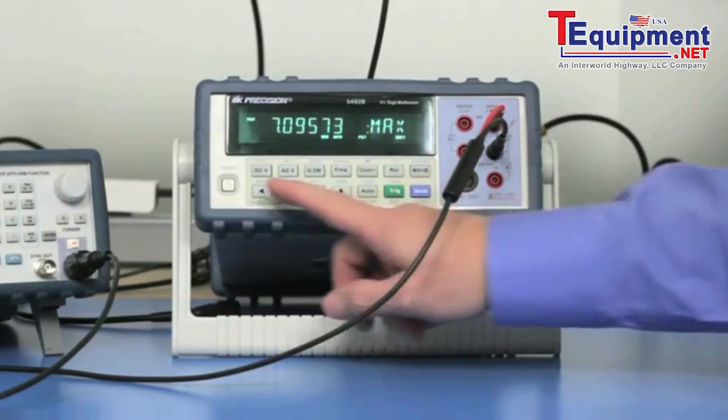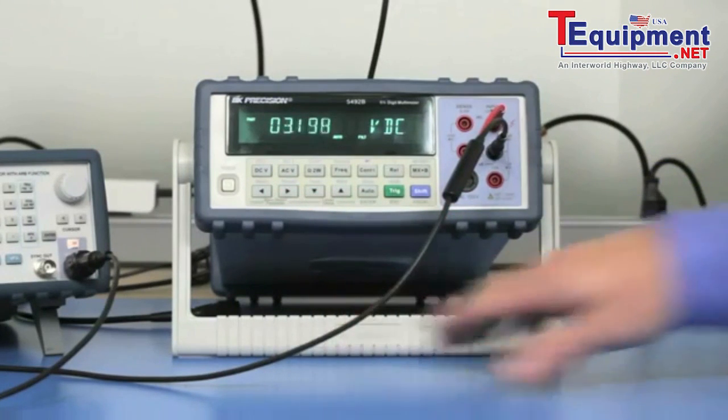To exit this, we do Shift and left arrow, and we're back to doing our normal measurements. So now the data stored into the buffer is in volatile memory. So if you were to power cycle the 5492B, you will lose all of that data. So please remember that. So that is the buffer storage feature of the 5492B. Thank you for watching.